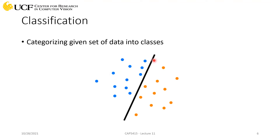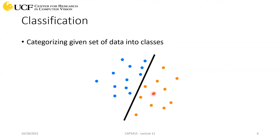Once you have the equation of that line, for any point in Cartesian space you plug in the x and y values and get a positive or negative number. Depending on the sign you determine which class the point belongs to. Blue points give a positive value, orange points give a negative value. This line acts as a classifier for any testing sample not present in the training data.